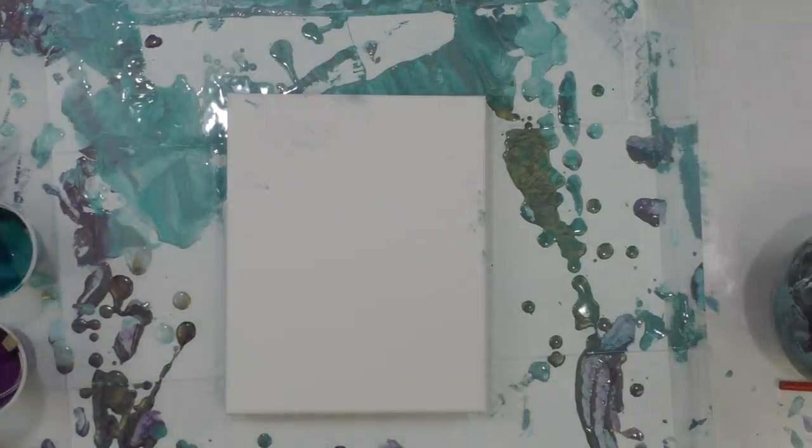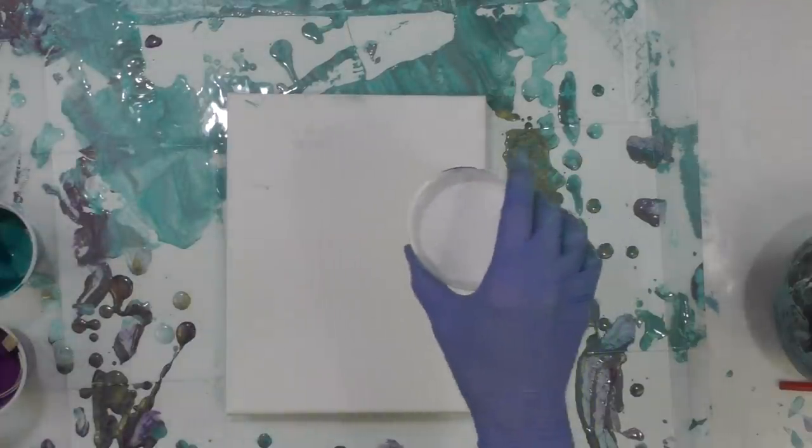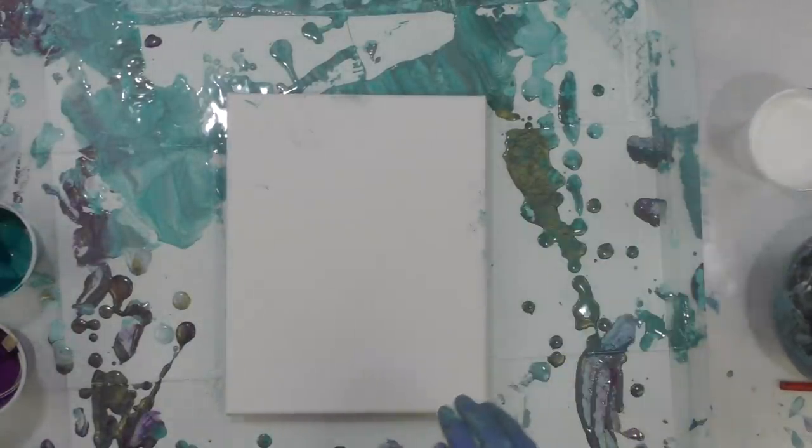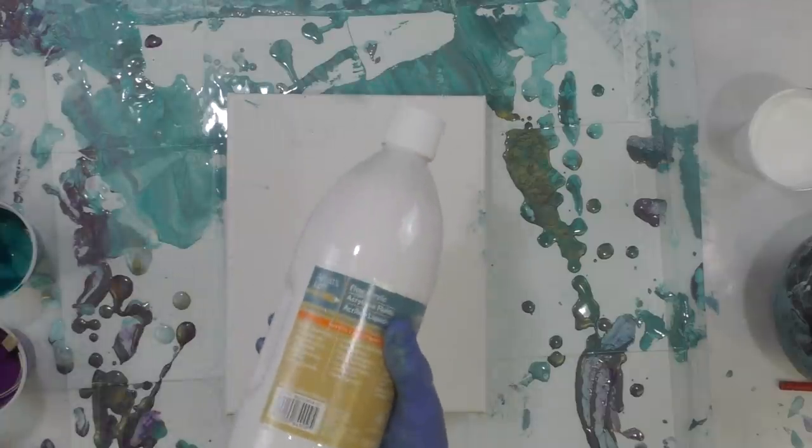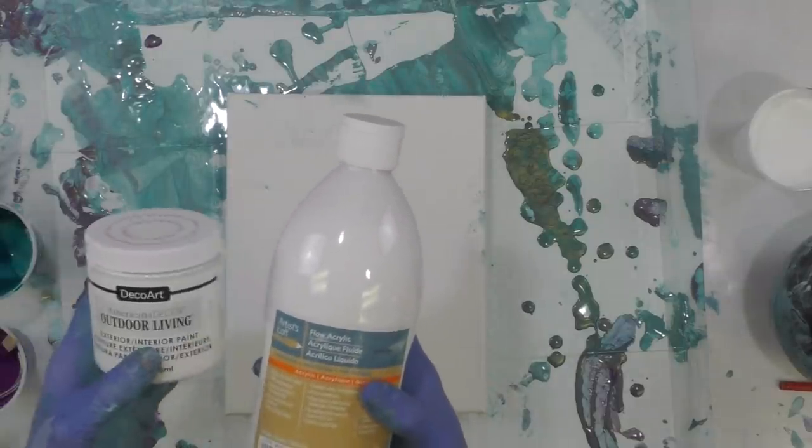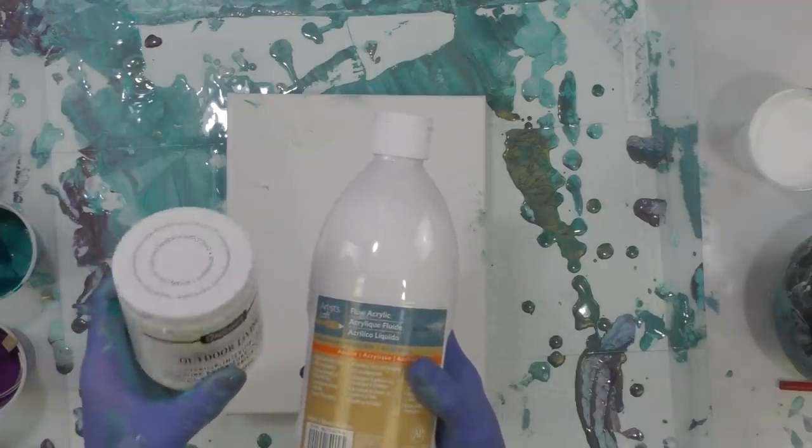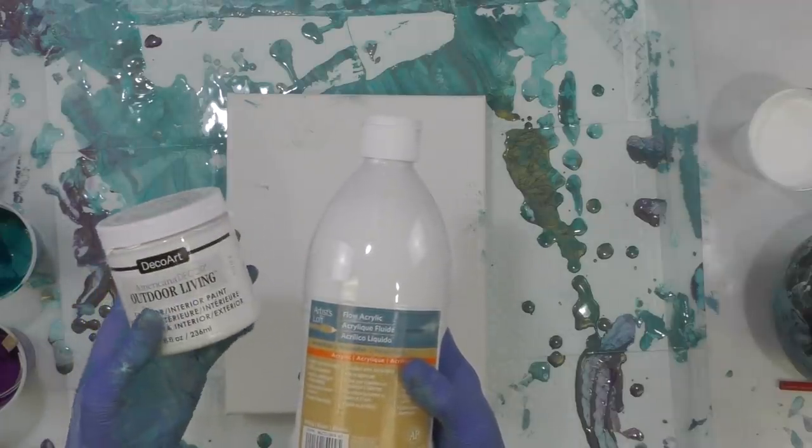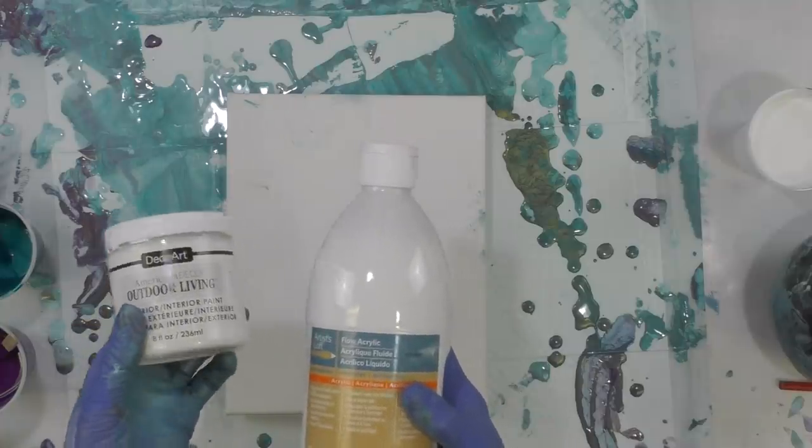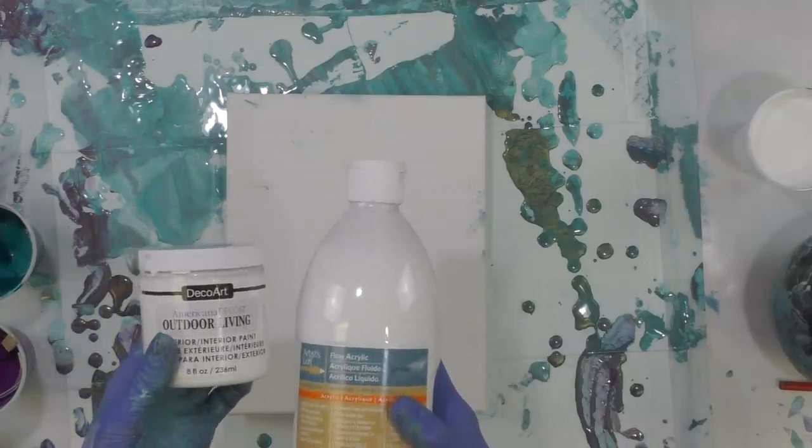And then my white, I've got this white mixture here. It is 50/50 Artist Loft Flow Acrylic White and Deco Art Outdoor Living Picket Fence, so it's a little bit of an off-white and it's exterior paint, which also means it's eggshell finish.